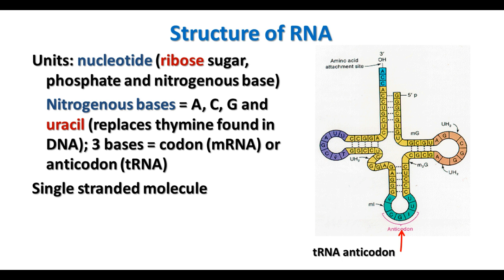RNA is also made of nucleotides like DNA is — made of a sugar, a phosphate, and a nitrogen base. This time the sugar is ribose. The nitrogen bases found in RNA are adenine, cytosine, and guanine like DNA, but now we have uracil rather than thymine. Uracil replaces thymine found in DNA; uracil is also a pyrimidine like cytosine, and it is complementary to adenine like thymine is. A three-base sequence is a codon in the messenger RNA, or an anticodon in the transfer RNA, that codes for a particular amino acid.